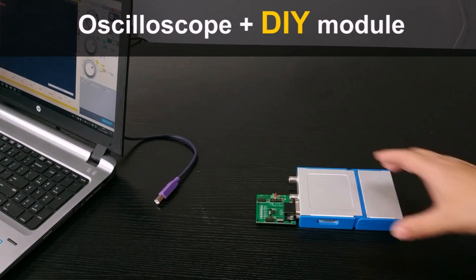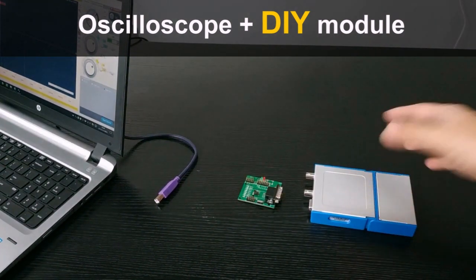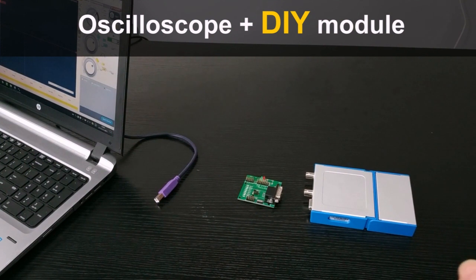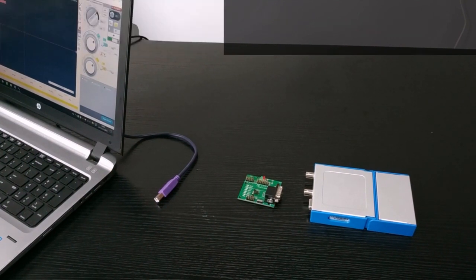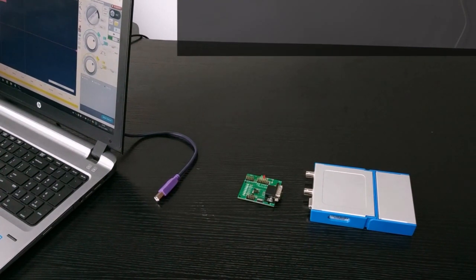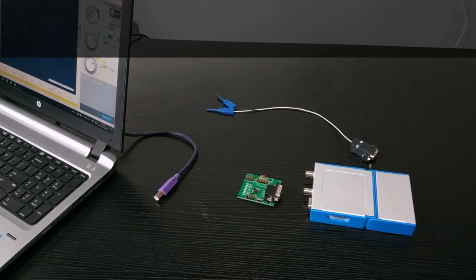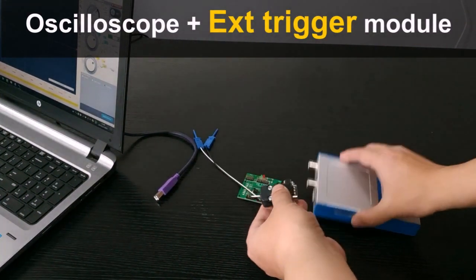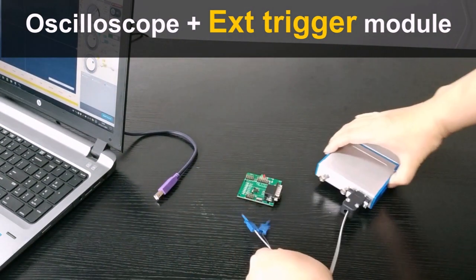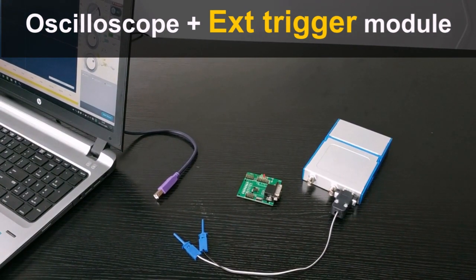On this panel we can change also the frequency. Now it is 1 kHz. Let's change it to 10 kHz. Here is our wave with 10 kHz frequency. We can also come back to the oscilloscope control panel to adjust the time division. Now we have a 10 kHz frequency and the amplitude is about 1.2V.